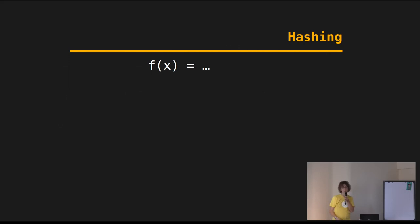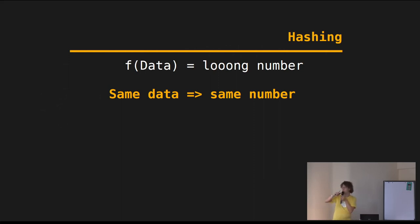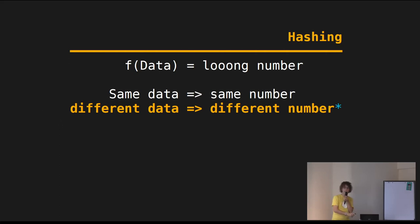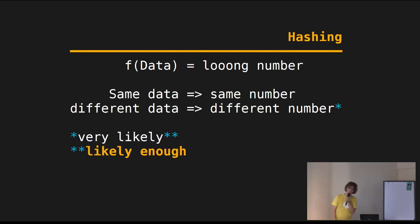I'll quickly introduce the idea of hashing. It's pretty simple math: you have a function with an input — in our case the input is data — and the output is a long number. If you put in the same data, the same number comes out. If you put in different data, a different number comes out. Some might ask: how can this work, because data is unlimited and a long number is limited? Therefore there's an asterisk, because it is very likely that it is different — and likely enough. That's the short version of hashing.